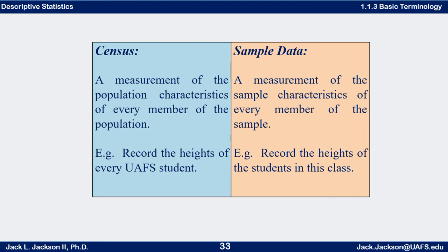If we do in fact record the heights of every UAFS student, we are measuring everybody in the population — that's called a census. A census is a measurement of every single population characteristic for every single member of the population. A census is almost never done. You may have heard the word census as it relates to the United States government, which is supposed to do a census of the American population every 10 years.